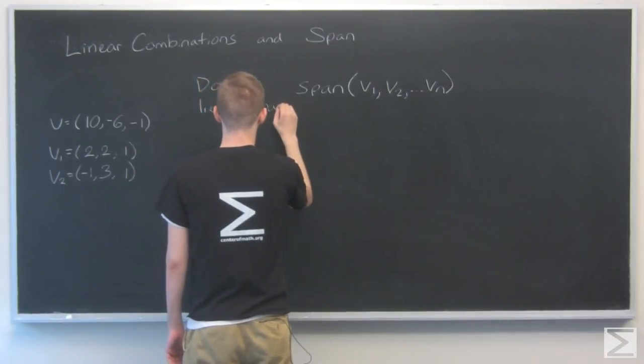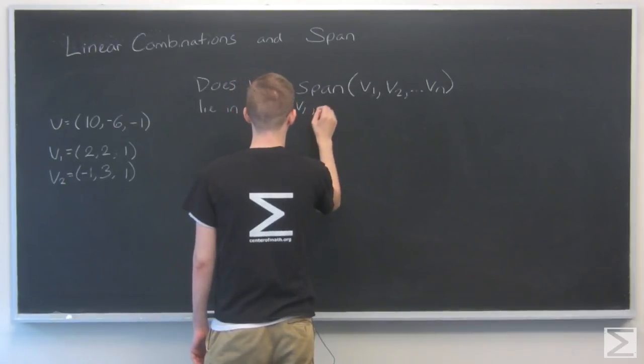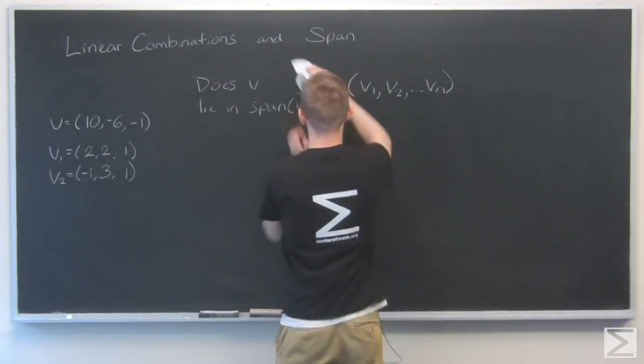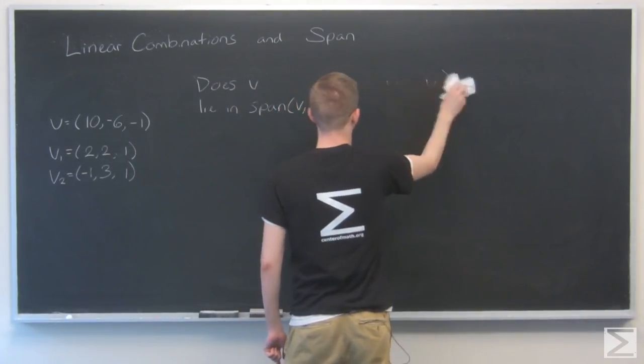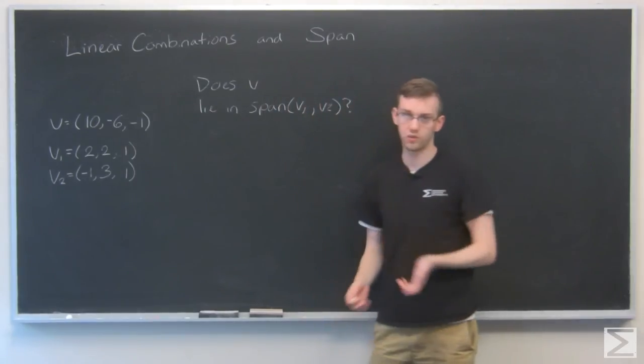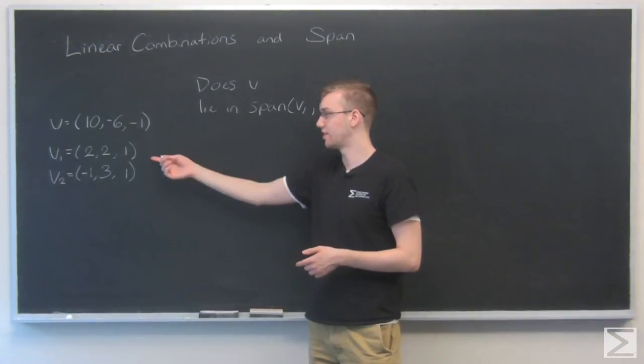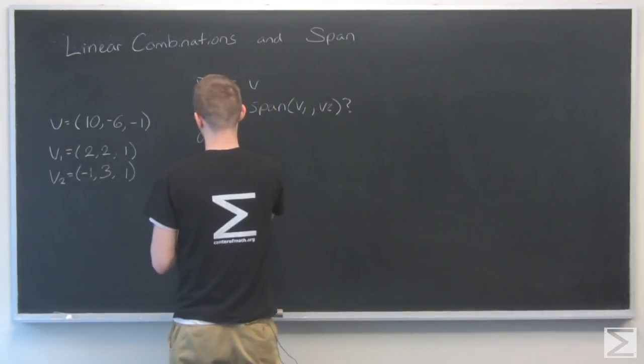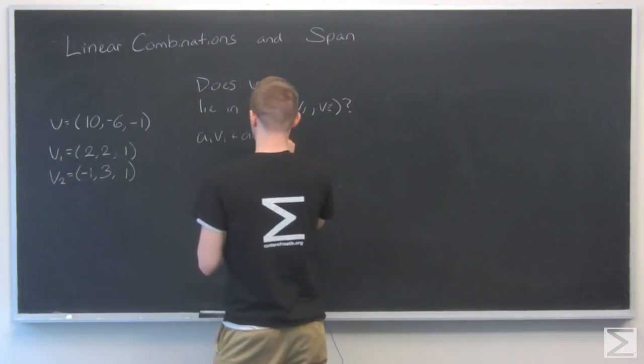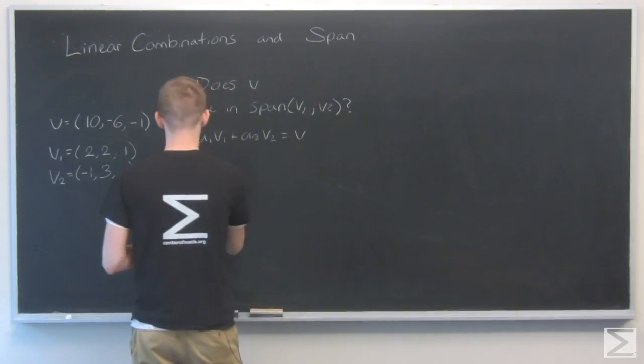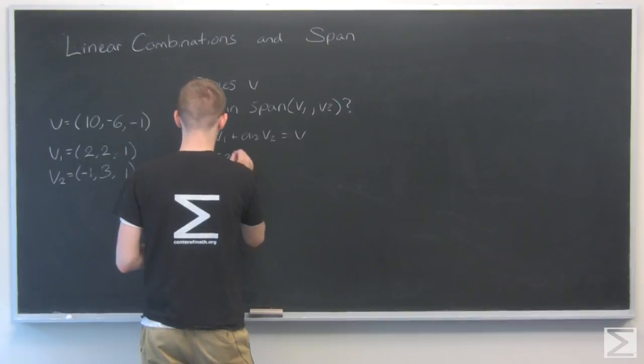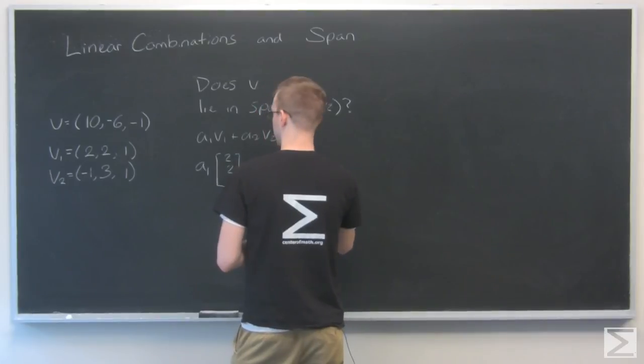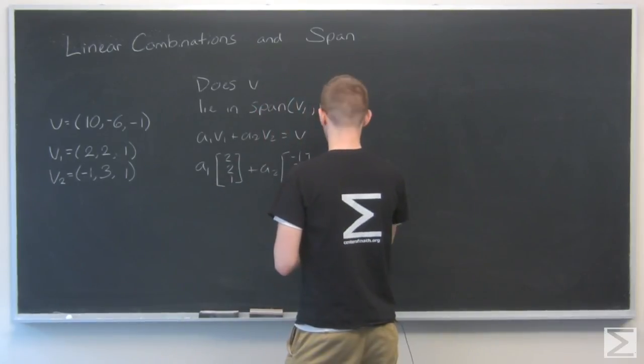That's basically asking, can you add a multiple of each of these to get that? So a1 v1 plus a2 v2 equals v. That looks like a1 times 2, 2, 1 plus a2 minus 1, 3, 1 equals 10, minus 6, minus 1.